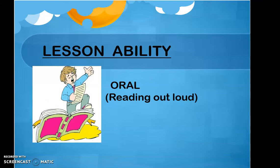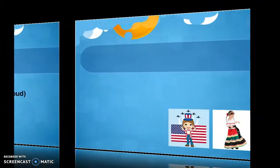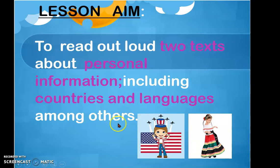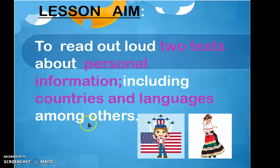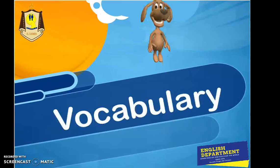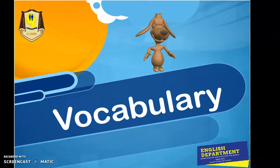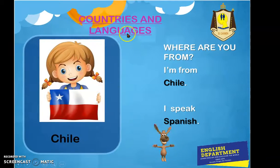Here we go! Lesson A: To read out loud two texts about personal information, including countries and languages among others. Objetivo de la clase: leer en voz alta dos textos en inglés acerca de información personal que incluye países e idiomas entre otros. First of all, we are going to present the vocabulary — vocabulario: countries and languages, países e idiomas.